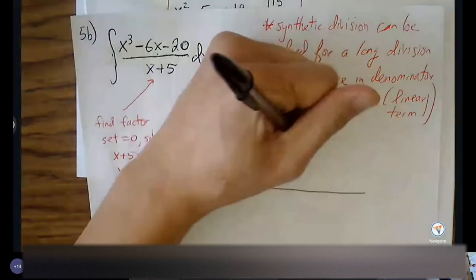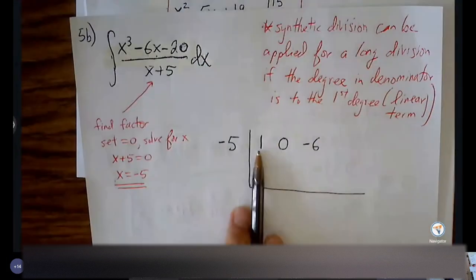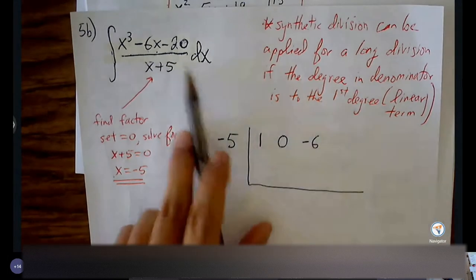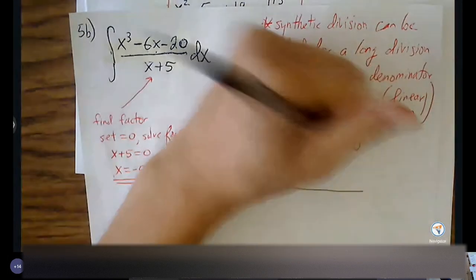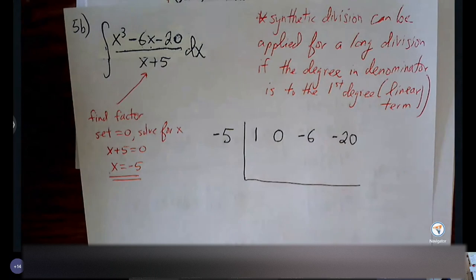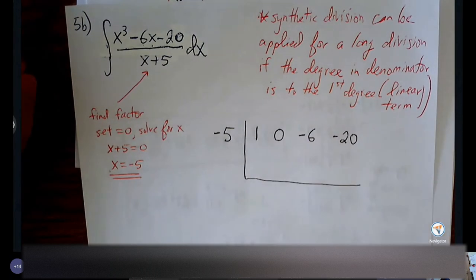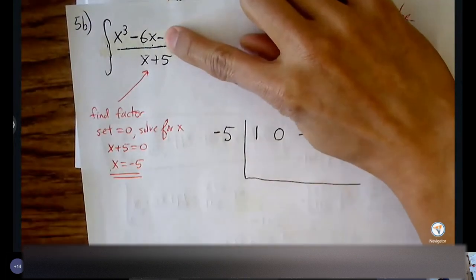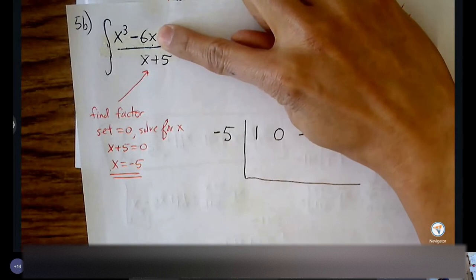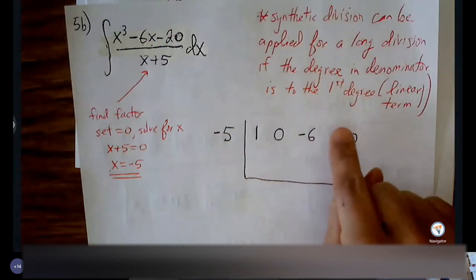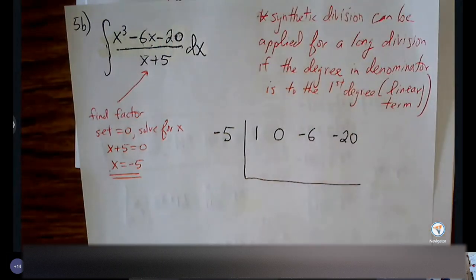We'll have 1 for x cubed. There's no x squared term, so we put zero as a placeholder. Negative 6x is the linear term, then we have the constant negative 20. So we have coefficients for x cubed, x squared, x, and the constant. We only need zeros for degrees that were skipped over in the middle — not for any degree left off at the end of the expression.